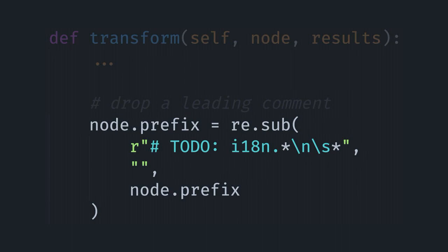For the bonus points of removing the preceding comment, we simply take the prefix string off of the matched node — in this case the power element — and do a regex substitution on it to find any line in that prefix that's the to-do comment, and simply replace it with an empty string. By putting that back onto the prefix, it'll automatically update the code appropriately.